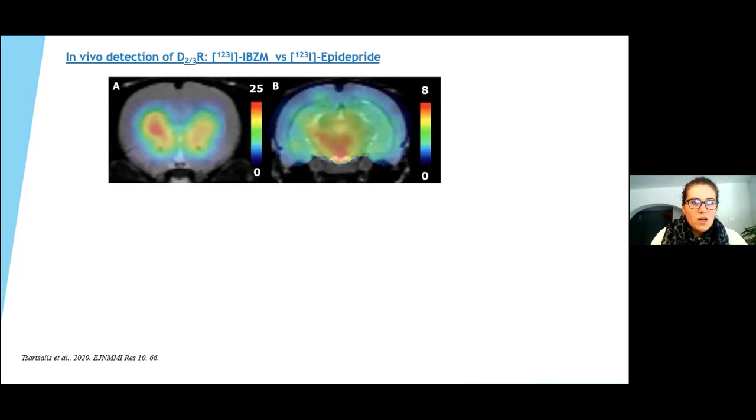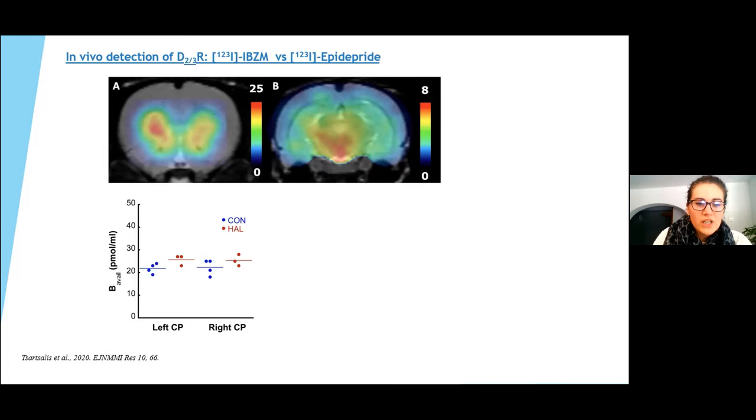So in this figure, you can see that with epidepride by a partial saturation method, we were able to produce parametric imaging representing the density of the dopaminergic receptor in the striatum, but also in extrastriatal regions including the midbrain where the cell body of the dopaminergic neurons are located.